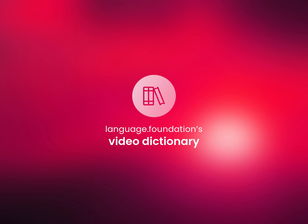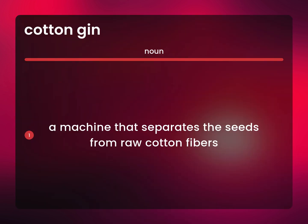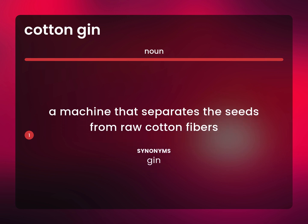Language.Foundation's Video Dictionary, helping you achieve understanding. A machine that separates the seeds from raw cotton fibers. Gin.